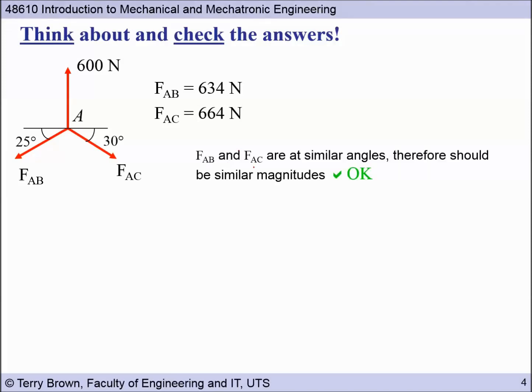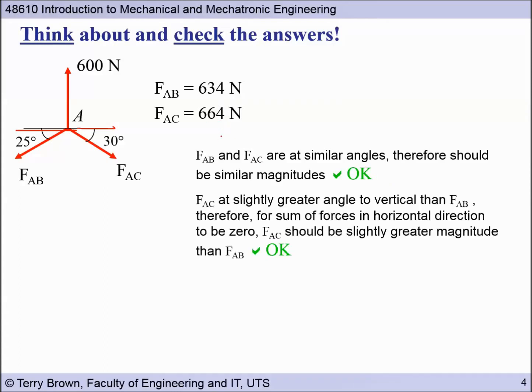Let's have a look. One way we can check is that FAB and FAC are at similar angles, so 25 and 30. So if we think about sum of the forces in the horizontal direction, these components here must be about the same, or must be the same, the two horizontal components. So therefore the magnitude of these two forces that are at similar angles must be similar. Okay, so we look at that, yep, they're not very different. So that's an indication that we haven't made a bad mistake. If we look at FAC, it has a slightly greater angle to vertical than FAB. Therefore, for the sum of the forces in the horizontal direction to be zero, FAC should be slightly greater in magnitude than FAB. So let's have a look. Yep, 664 and 634, so yes, FAC is slightly greater.